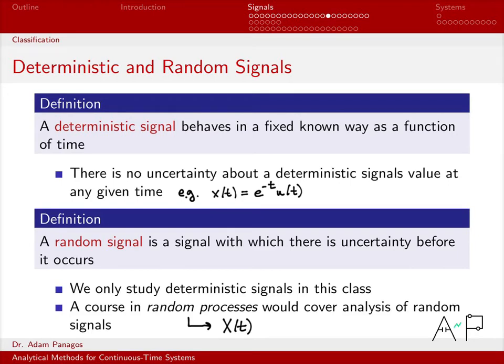Instead I have to describe it in terms of its average value as a function of time, or its variance as a function of time, or other statistical quantities like how it decorrelates as a function of time. So the descriptions for random processes are very different than deterministic signals.